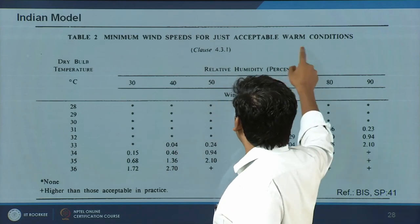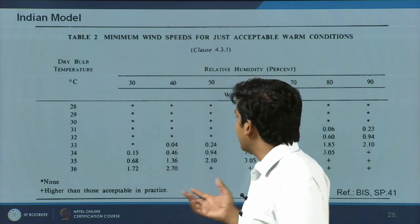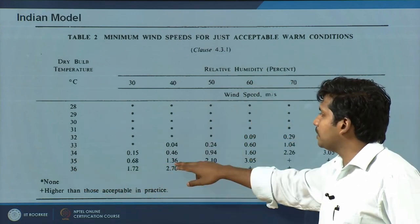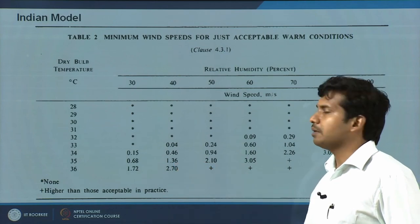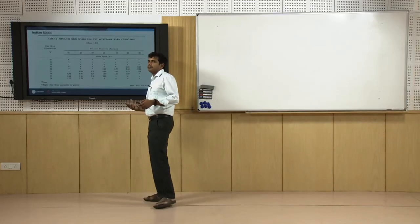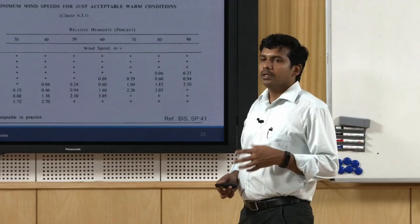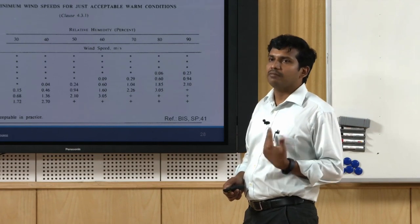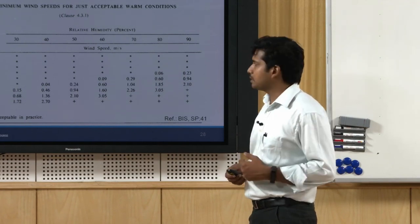There is a term called 'acceptably warm' — meaning it is ok, you can accept it. At 35 degrees and 40% humidity, you will need around 1 to 1.5 meter per second air velocity. Typically with a ceiling fan, pedestal fan, or table fan close to the throw, you can get around 1 to 1.5 meter per second air velocity.